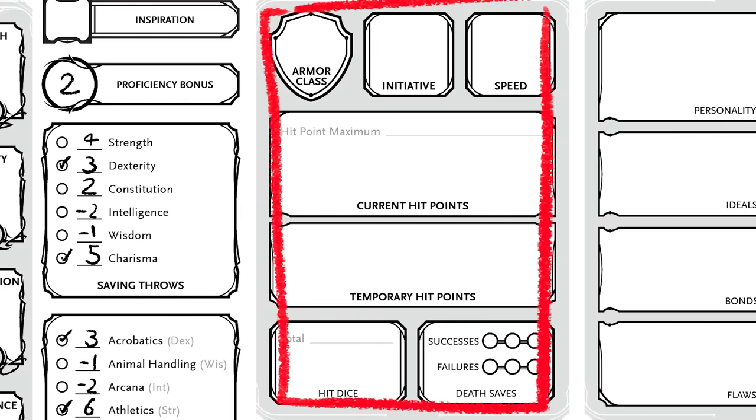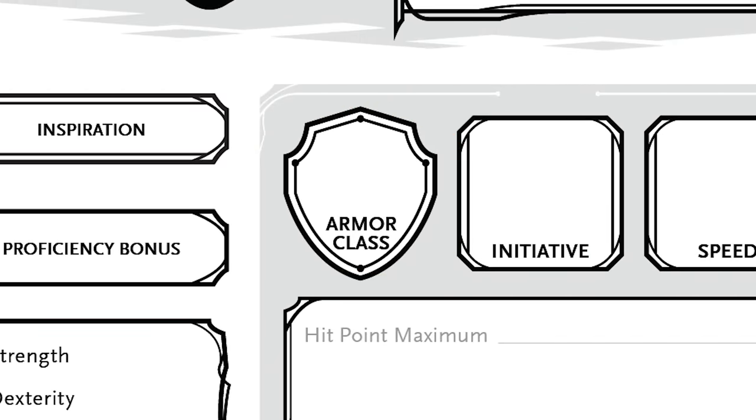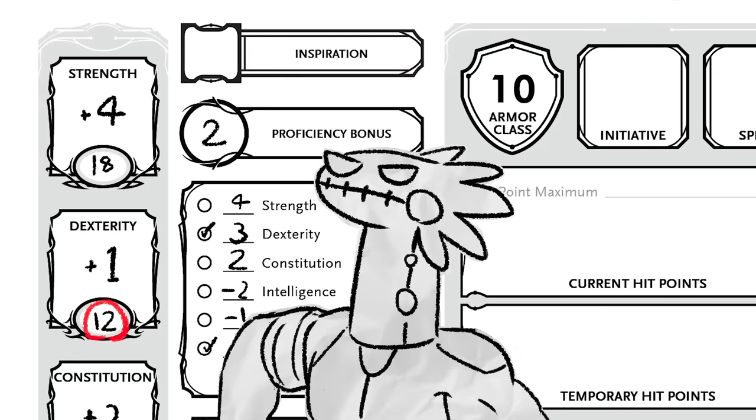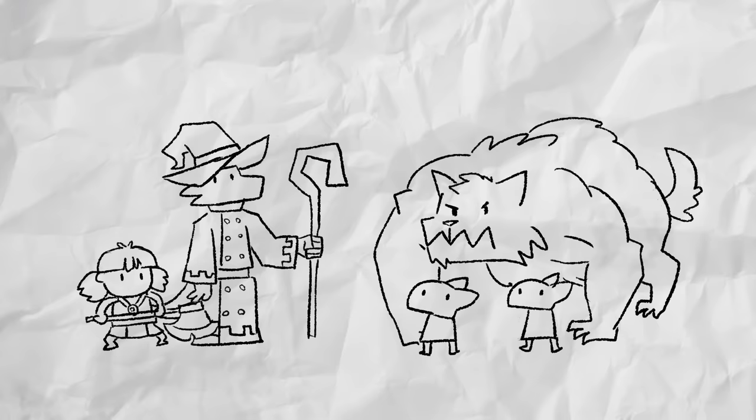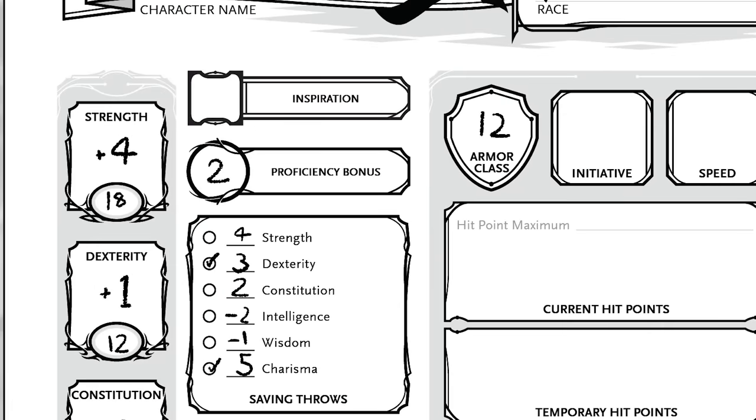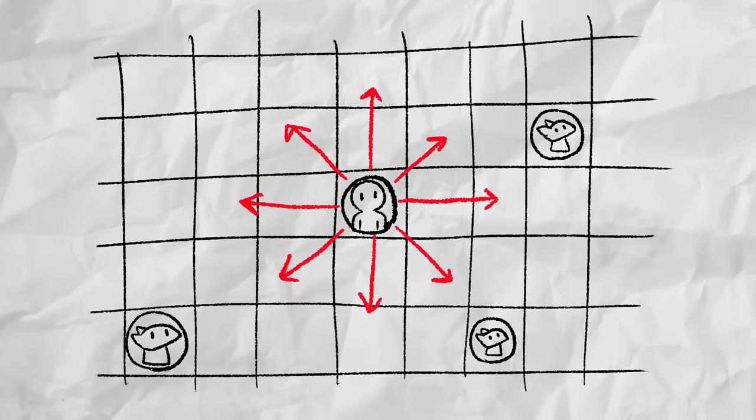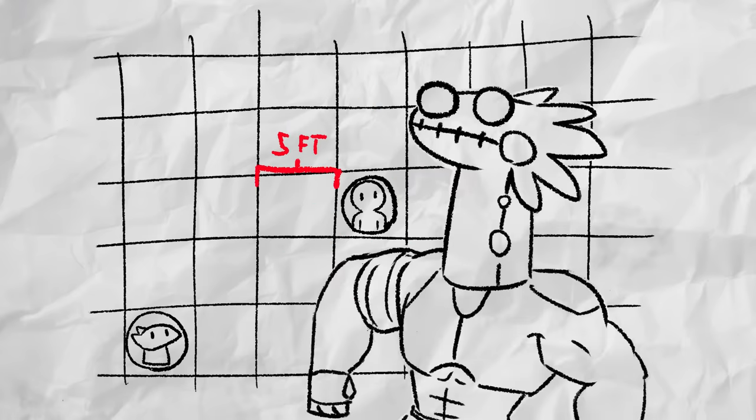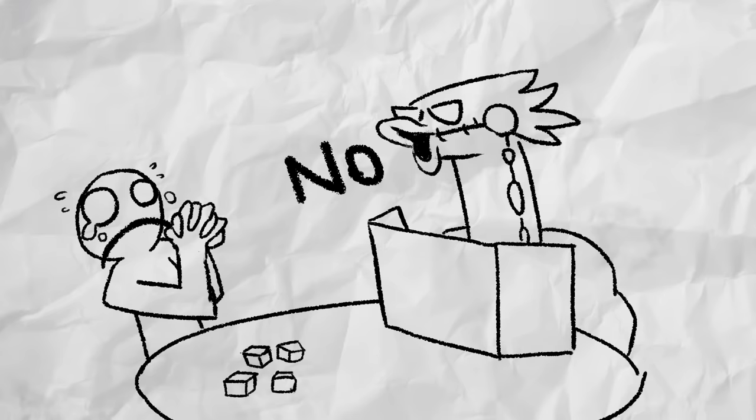Up at the very top left is your armor class, or AC for short. This by default is 10 plus your dexterity modifier. However, this can be increased by the different types of armor. Whichever one you start with will depend on which class you pick. Next is initiative. Whenever an encounter begins, initiative is rolled and determines who goes first. This number is the same as your dexterity modifier and is added to your initiative roll. And this last little block is speed, which is how much you can move across the checkerboard each turn, initially determined by your race.